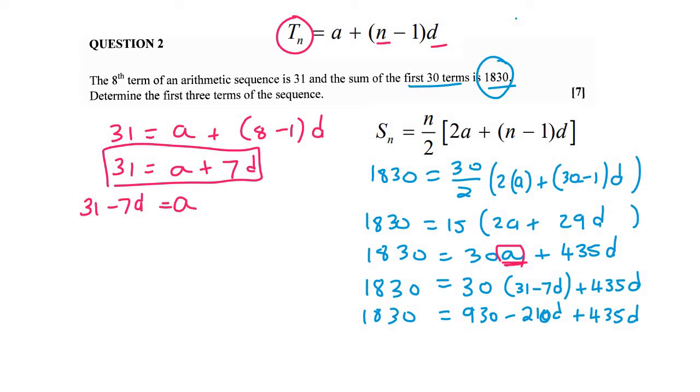So I'm just going to put the D's together. So minus 210 plus 435 is 225D. And then 1830 minus 930 is 900.